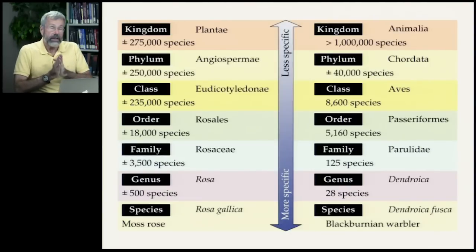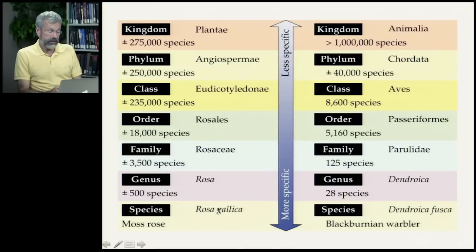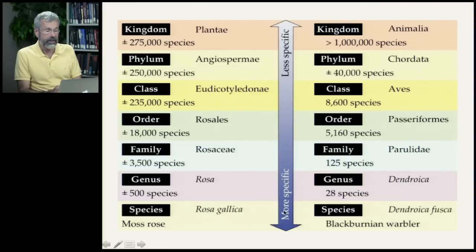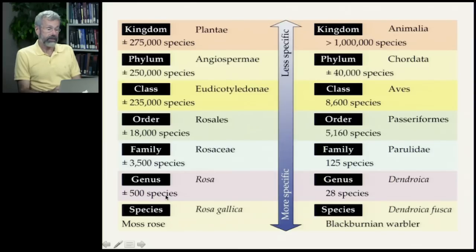As we go through this taxonomic hierarchy, we start with the species. Rosa gallica, also known as the Moss Rose, is a species. For the Blackburnian Warbler, there's Dendroica fusca. We have very specific designations at the species level, and then we go up to less specific, broader classificatory units as we work our way up to the kingdom. Rosa gallica is one of 500 different species in the genus Rosa — there are 500 different kinds of roses.